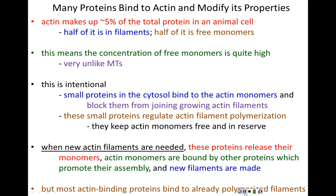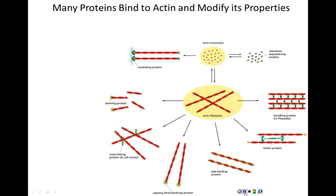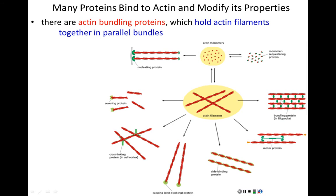That's an exception to the rule. Most actin binding proteins — most of these accessory proteins — bind to polymerized filaments and stabilize them. There are actin bundling proteins which hold actin filaments together in parallel bundles, almost making a sheet of interwoven connected actin filaments. This sheet will be important for cell crawling.